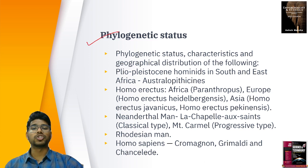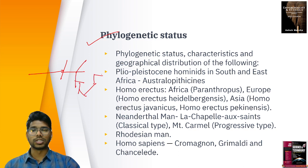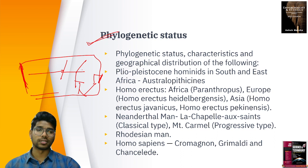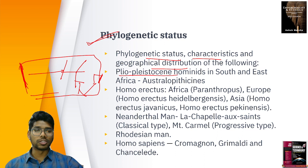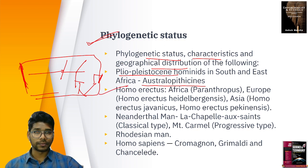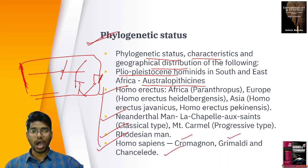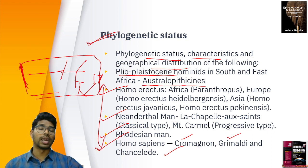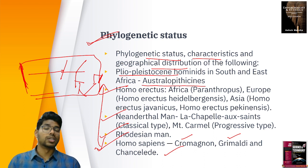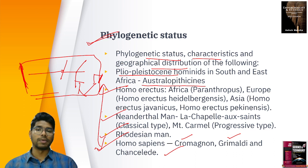Next, we study phylogenetic status — the evolutionary tree showing when species evolved, how they diverged or converged. We study the phylogenetic status, characteristics and geographical distribution of Pleistocene hominids in South and East Africa, Australopithecines, Homo erectus, Neanderthal man, Rhodesian man, Homo sapiens, and other subspecies — establishing which came first, who are the intermediaries, and how different species are linked together.